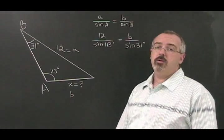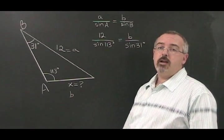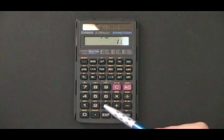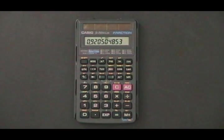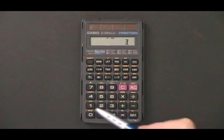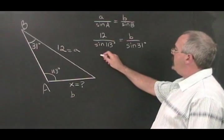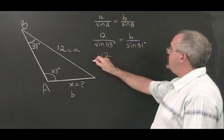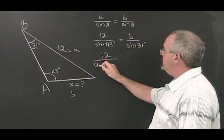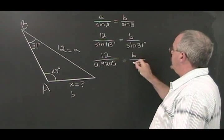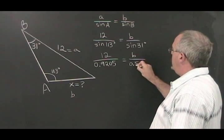The next thing to do is to find the values of sine A and sine B in our calculator. The sine of 113 degrees is equal to 0.9205. The sine of 31 degrees is equal to 0.5150. Our formula can be rewritten like this. 12 over 0.9205 is equal to B over 0.5150.